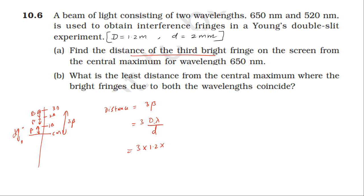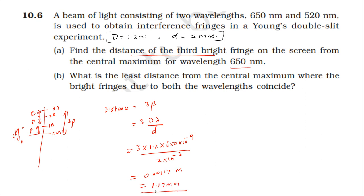Substituting values: D = 1.2 meter, λ = 650 nanometer = 650 × 10⁻⁹ meter, d = 2 millimeter = 2 × 10⁻³ meter. Calculating gives 0.00117 meter, which is 1.17 millimeter. So 1.17 millimeter is the distance from the central bright to the third bright fringe.